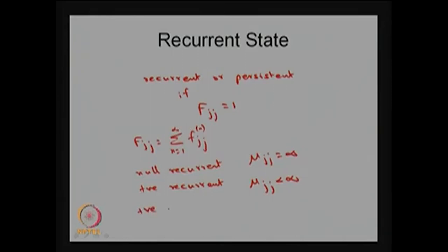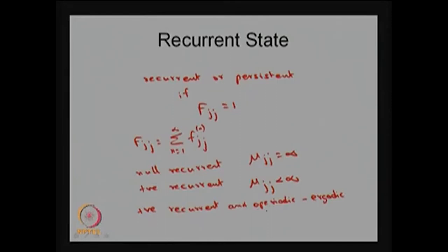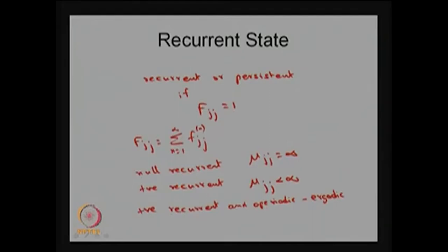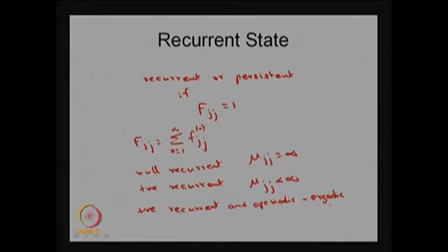If any state is positive recurrent as well as aperiodic, then that state is called an ergodic state. A state is ergodic whenever it is positive recurrent and aperiodic, meaning the periodicity is 1 — the greatest common divisor of all possible steps in which the system returns to the same state is 1. If the period is 1 and the state is positive recurrent with finite mean recurrence time, it is an ergodic state. In a Markov chain where all states are ergodic (all positive recurrent and aperiodic), we call that an ergodic Markov chain.